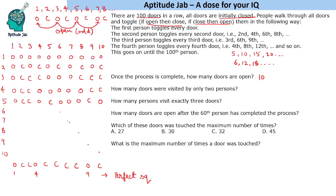Why are the perfect-square doors open? Because a door is toggled by each person whose number is a factor of that door number. For example, door 6 is touched by persons 1, 2, 3, and 6. Door 9 is touched by persons 1, 3, and 9. It is all about the factors of numbers. Perfect squares have an odd number of factors, which is why those doors remain open.